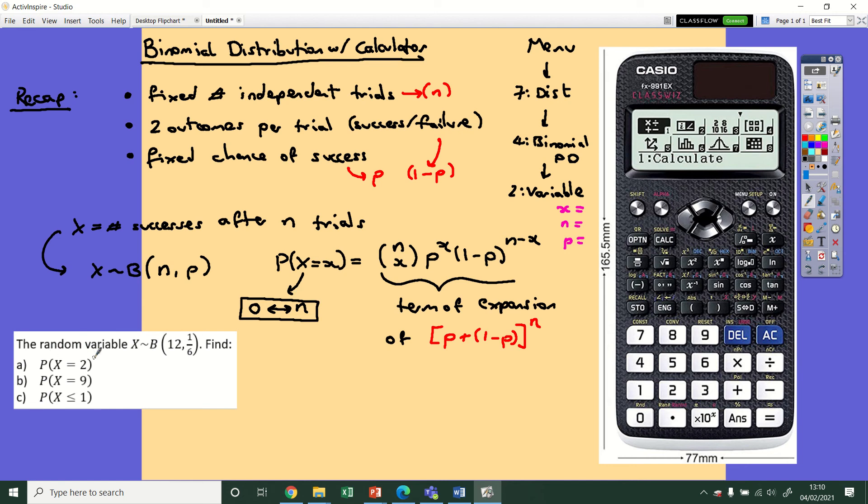The probability that X equals two—once you've gone through this navigation to get to here, you're going to want to type in x is two, n is 12, p is a sixth, and then press equals. If you press equals, it will tell you p equals 0.2961 to four decimal places. Use your calculator to verify that for me.